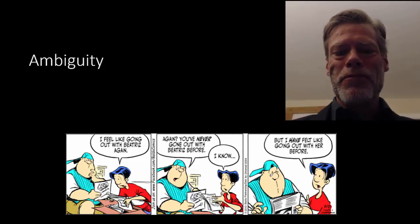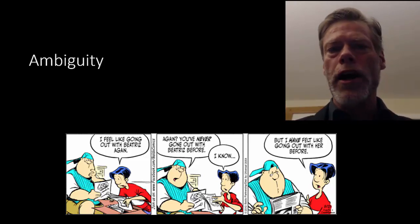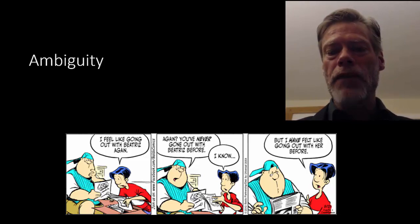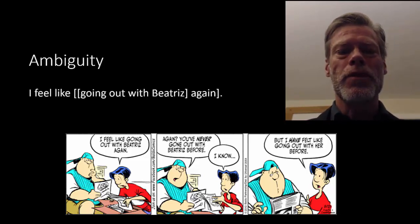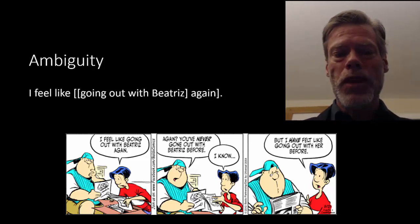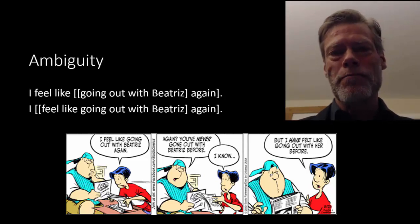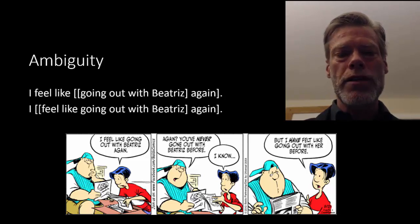Here's the last example, from the comic strip Baldo. Baldo says, 'I feel like going out with Beatrice again.' His friend, not surprisingly, finds this odd and says, 'Again? You've never gone out with Beatrice before.' And Baldo says, 'I know, but I have felt like going out with her before.' There's an underlying structural ambiguity: in one case, 'again' is modifying the verb phrase 'going out with Beatrice,' which is how Baldo's friend interpreted it. In the other case, it's modifying 'feel like going out with Beatrice,' which is how Baldo meant it. It will be useful to draw the tree structures for these two interpretations.